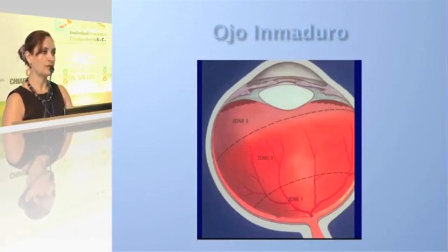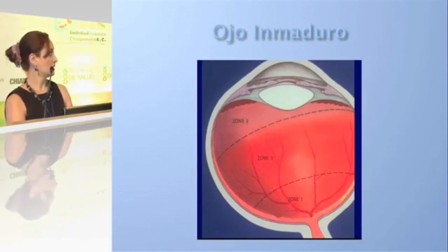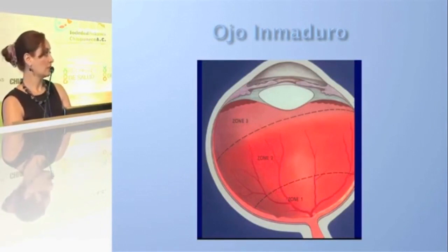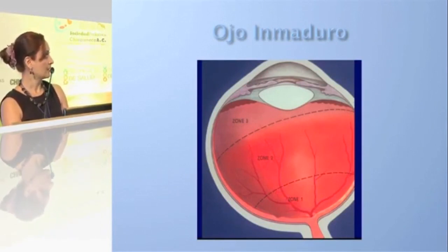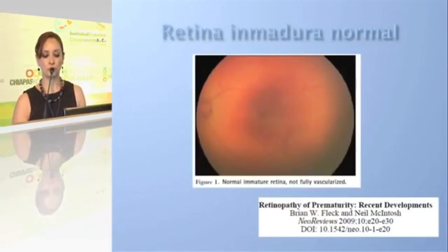There are two theories. This is an image of the posterior retina — the retina of a recently born premature infant, in which we can appreciate precisely the emergence of the vessels. There is no division between the vascular and avascular retina, and this would be the normal appearance of the eye of a premature infant.